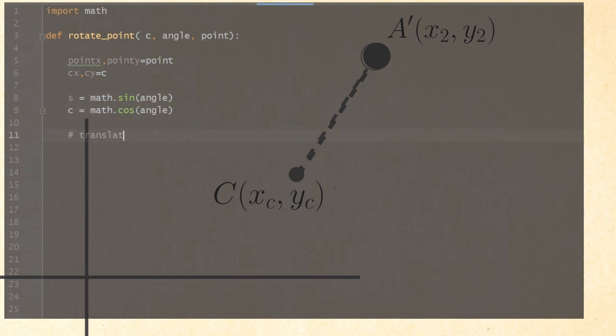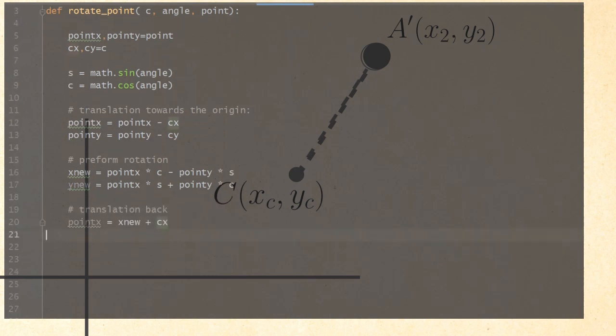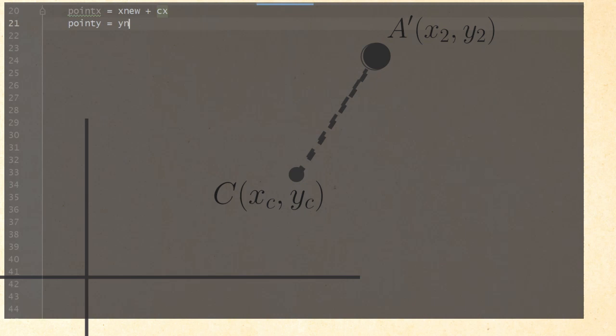Like we said we translate A by subtracting Cx and Cy from Px and Py. Next we write the rotation equation and we translate the result back by adding Cx and Cy to A. And finally we return the coordinates as tuple.